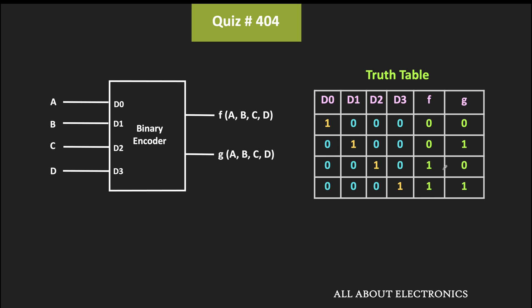As you can see, the f output is high when either d2 is high or d3 is high. That means the logical expression of f is equal to d2 plus d3. Likewise, the g output is high when either d1 is high or d3 is high. That means the boolean expression of g is equal to d1 plus d3.